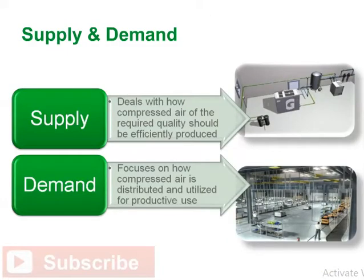Compressed air systems can be divided into a supply side and a demand side. The supply side deals with how compressed air of the required quality should be efficiently produced. The demand side focuses on how compressed air is distributed and utilized for productive use.